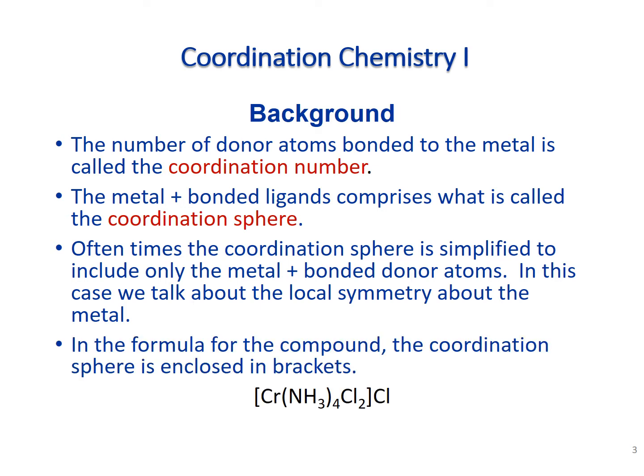When we write out a coordination sphere, it is enclosed in brackets. Everything within those brackets is what is coordinated to the metal — in this case chromium — and that is the coordination sphere or inner coordination sphere. You can see it also has a counter ion on the outside of the brackets, such as a chloride outside the brackets.